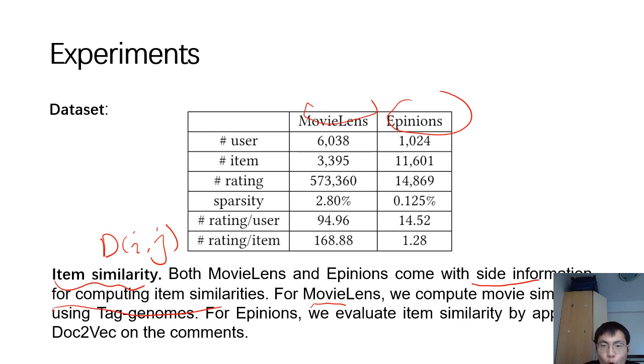For MovieLens, we use tag genomes. And for Epinions, we use doc2vec on the user comments.